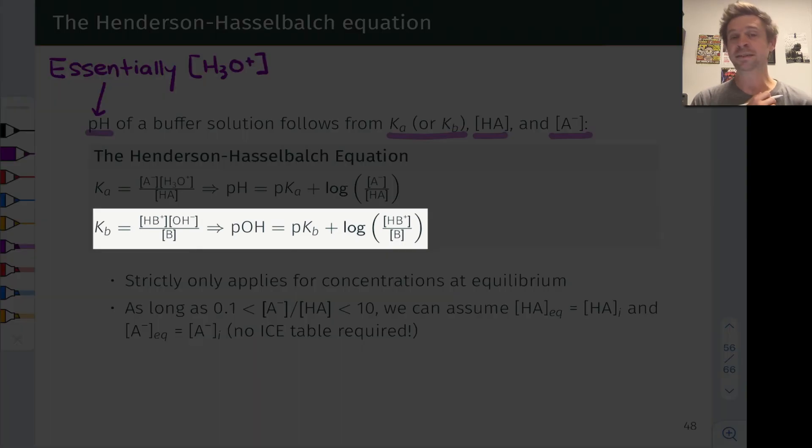There's also a basic form that follows from the definition of the base ionization, or basicity constant, Kb. And while I won't go through the derivation of this equation, I encourage you to do so on your own, starting from the equilibrium constant and equilibrium equation for base ionization that we've seen previously, and working toward the equation on the right, which says that the pOH of a buffer system based on weak base B is equal to pKb for the base, plus the base 10 logarithm of the conjugate acid concentration HB+, divided by the base concentration B.